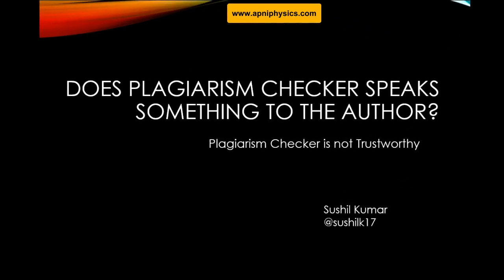As a researcher, you may have seen many times that a journal rejects your article due to the plagiarism report. A plagiarism checker, in a single sentence, checks whether the content you have written is original or taken from somewhere else. If you cited the citation, there is no problem. But if you did not mention the exact original citation, the plagiarism software tells you about the original source — whether it is a journal article, a web source, or any media file.